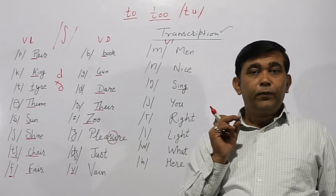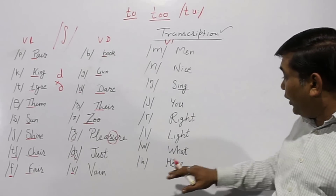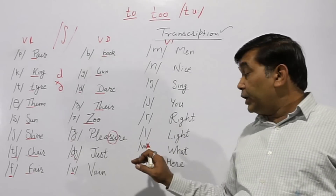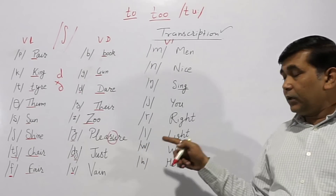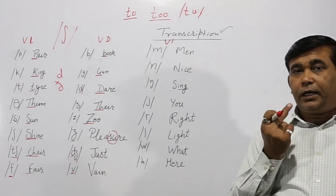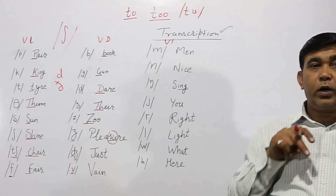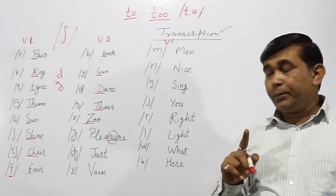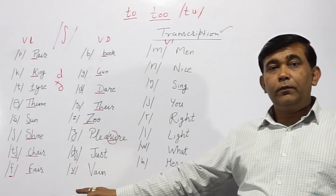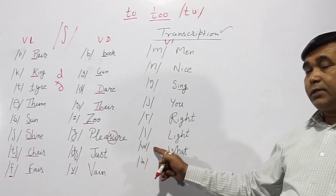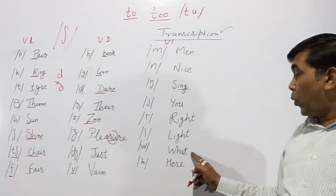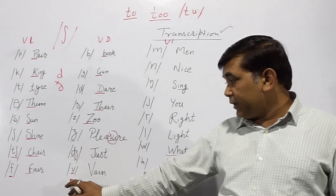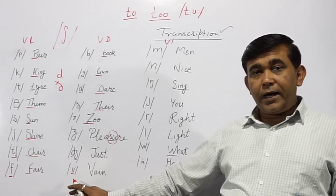Keep in mind: we have another /w/ sound. For /v/, our upper teeth touch our lower lip — /v/, /v/. But for /w/, the upper teeth do not touch the lower lip. So /w/ as in 'what', and /v/ as in 'vain'.